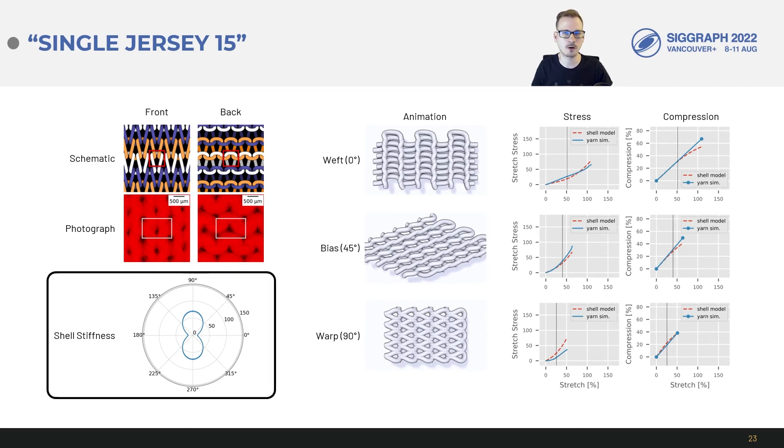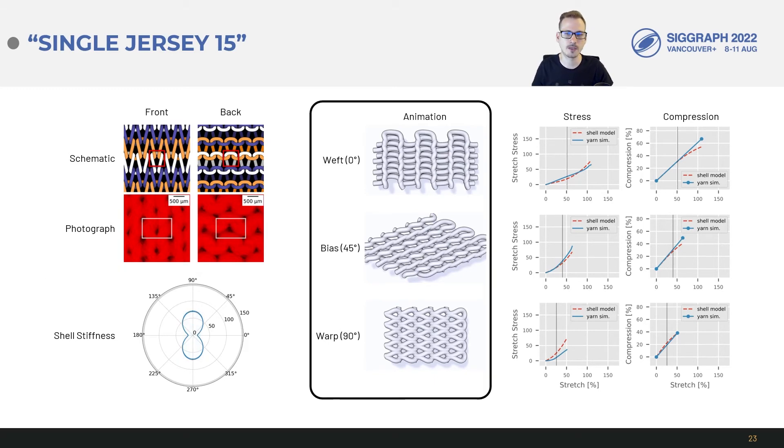Using the thin shell model we can visualize a radial stiffness. From this we see that the fabric has the expected anisotropy for the jersey where it's compliant along 0 degrees and stiffer along 90 degrees.